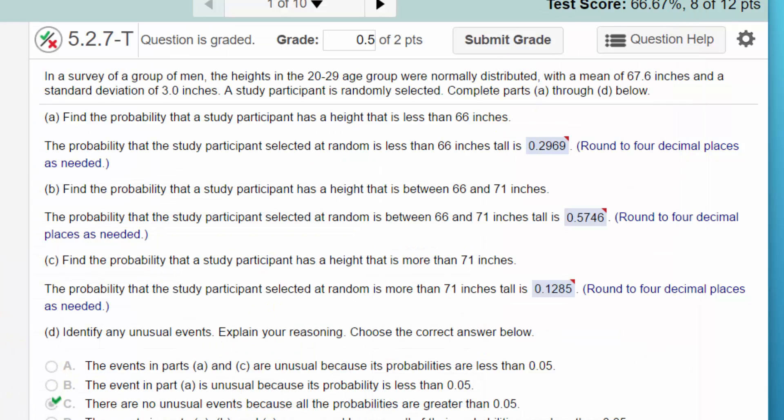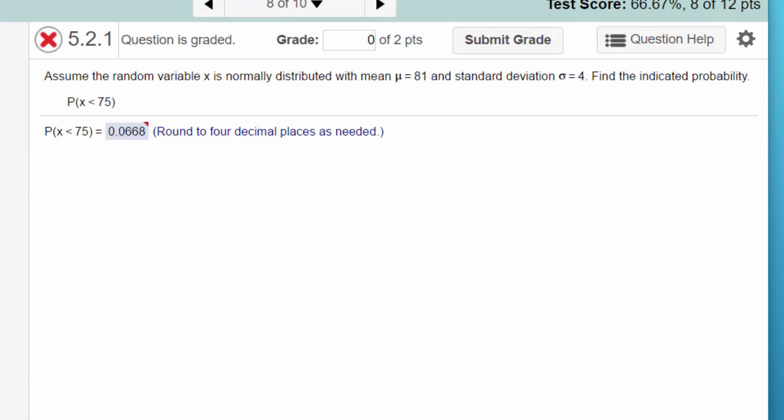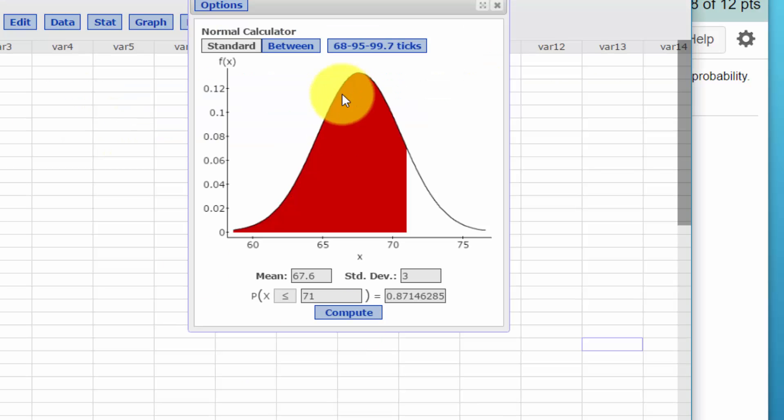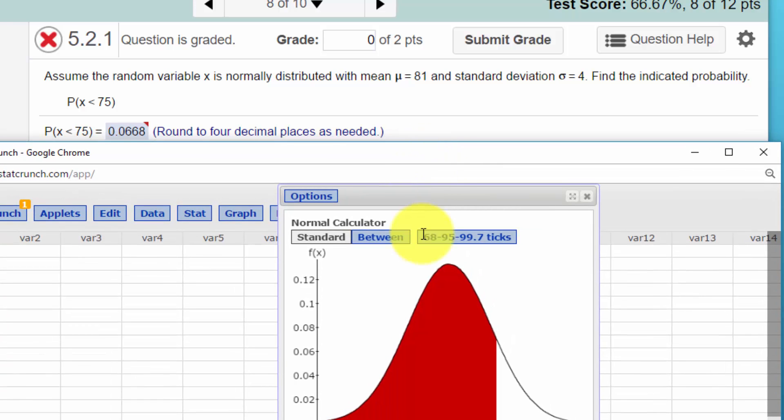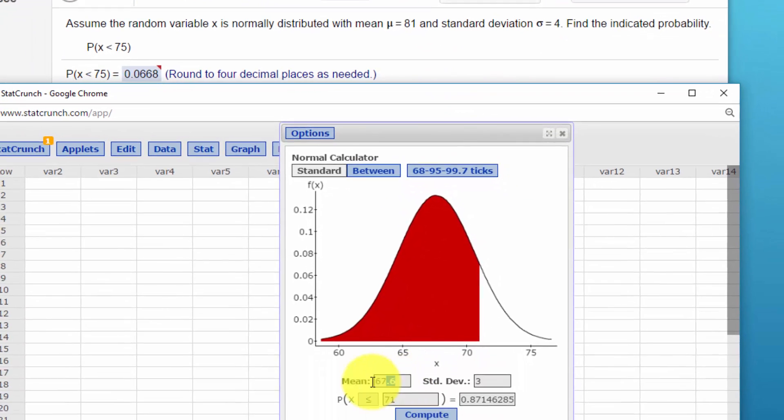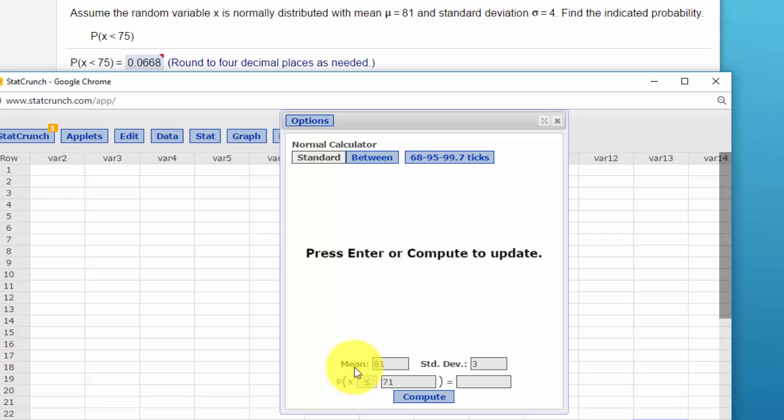Let's go on to the next problem this person missed. And it says, assume the random variable x has a normal distribution with a mean of 81, standard deviation of 4, find the indicated probability, the probability of x less than 75. So I'm going to call up our calculator again.